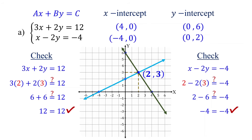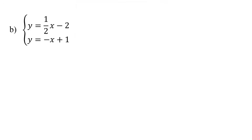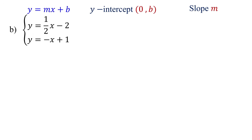Now, let's solve the second example where the equations are given in slope-intercept form. To graph an equation in slope-intercept form, the most straightforward method is to use the y-intercept and the slope. So, the first step is to identify these values from the equations.